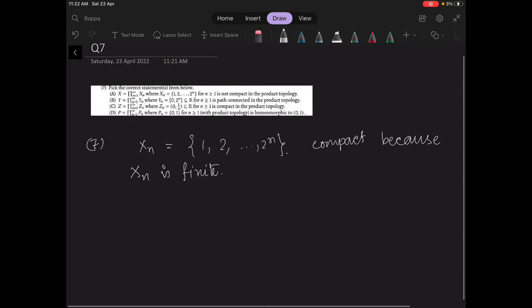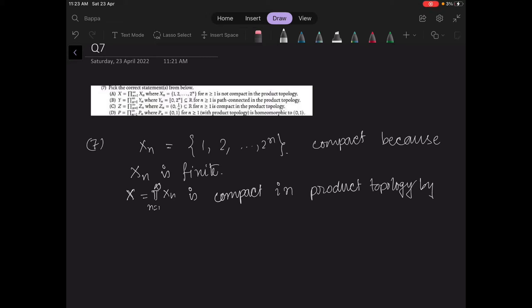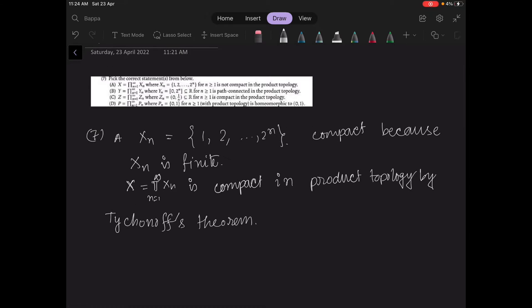So the infinite product of xn, this is compact in product topology by Tychonoff's theorem. So option A is false.